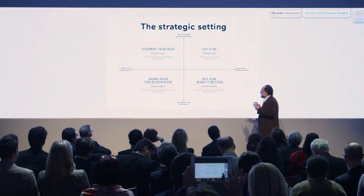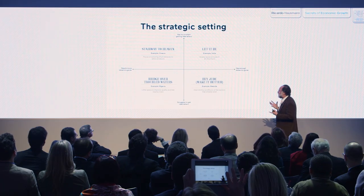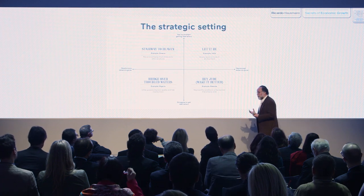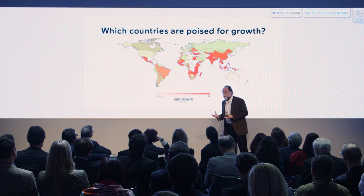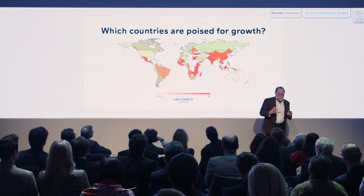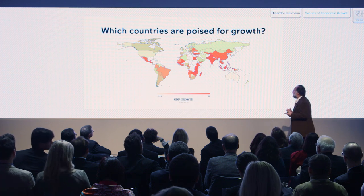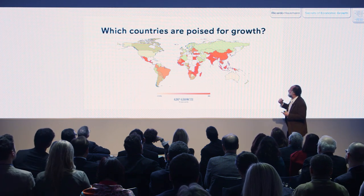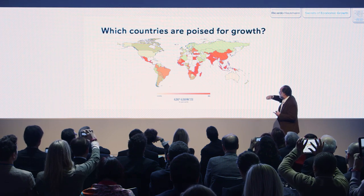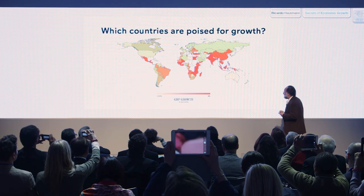Countries are facing different predicaments, and that leads to different emphases of strategy. We can use the position of a country in the product space and how easy it is for them to get more letters to predict growth. This is our estimate of growth for the world in the next decade using this framework. We are very constructive on India and Pakistan, a little bit less growth in China, and very positive about Southeast Asia.